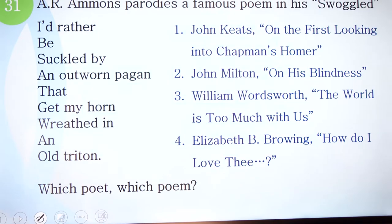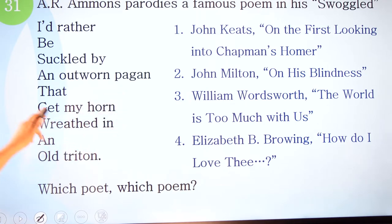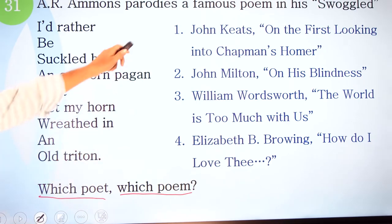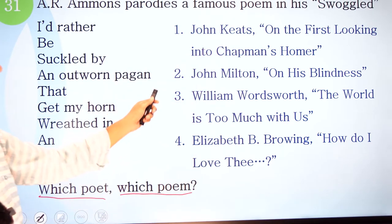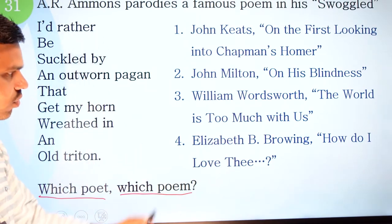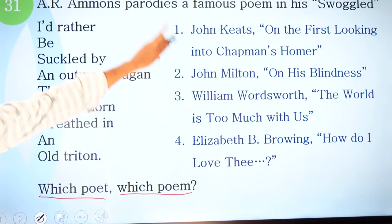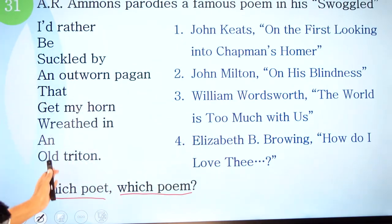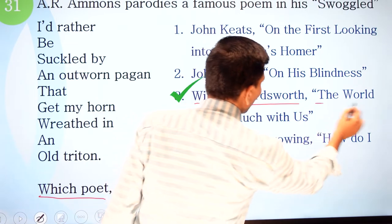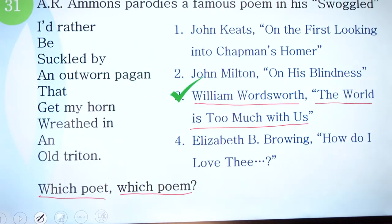Question 31: A.R. Ammons parodies a famous poem in his work 'Corson's Inlet.' The parody line reads: 'I would rather be suckled by an outworn pagan than get my heart ripped in an old Triton.' Which poet and which poem? Options include John Keats, John Milton, William Wordsworth, and Elizabeth Barrett Browning. The correct option is number three — William Wordsworth's 'The World Is Too Much with Us.'